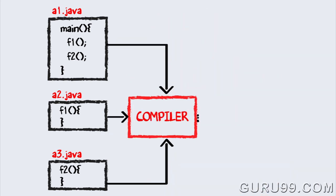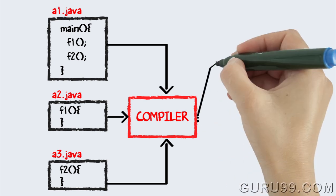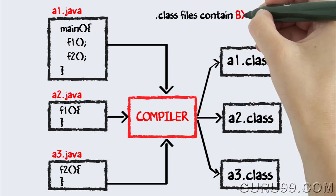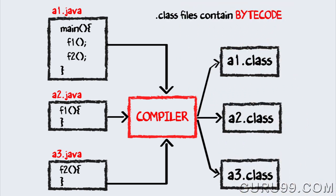The compiler will compile the three files and produce corresponding .class files, which consist of the bytecode. Unlike C, no linking is done.